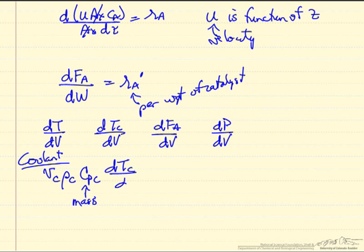The energy balance, change in the temperature of that coolant as a function of distance down, is pi D U, the heat transfer coefficient, temperature of coolant minus T. And we would solve this equation simultaneously with the other equations for a tubular reactor.